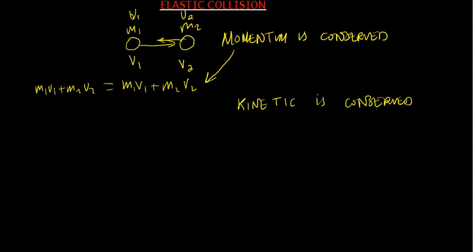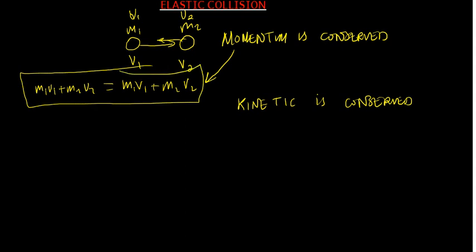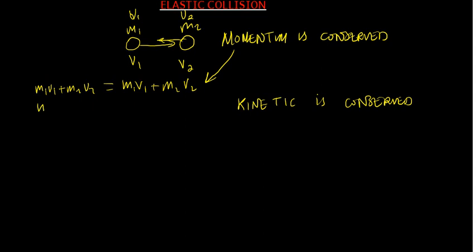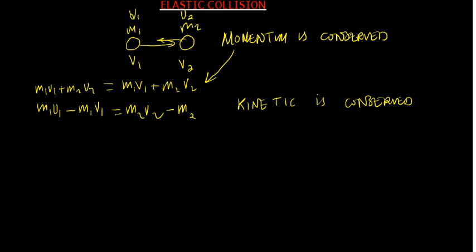We can rewrite the momentum formula by bringing terms with M1 to one side: M1U1 − M1V1 = M2V2 − M2U2. Factorizing the masses gives M1(U1 − V1) = M2(V2 − U2). Let's call this equation 1, from conservation of momentum.